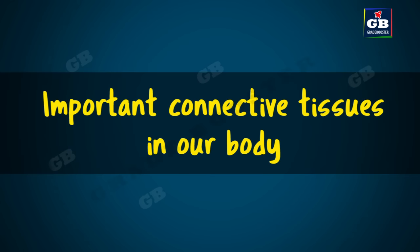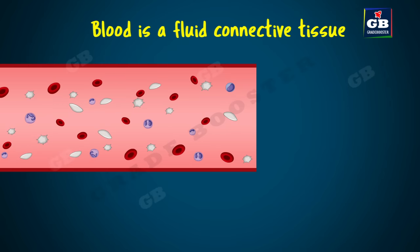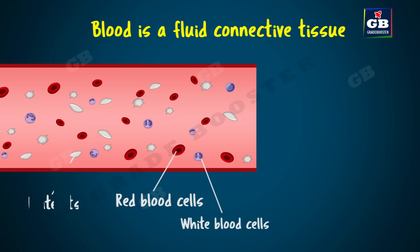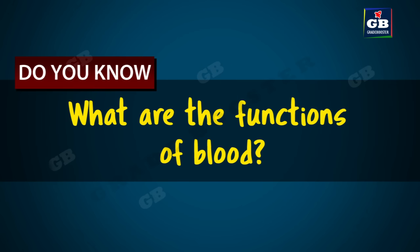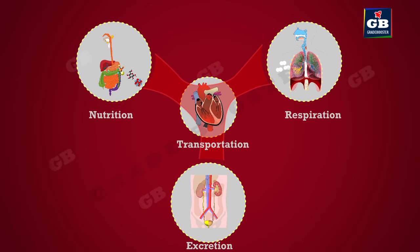Let us study some important connective tissues. Blood is a fluid connective tissue. It has different types of cells — RBC, WBC, and platelets — suspended in a fluid matrix called plasma. The plasma contains proteins, salts, and hormones. Blood transports nutrients, gases, hormones, and waste materials between different parts of the body.